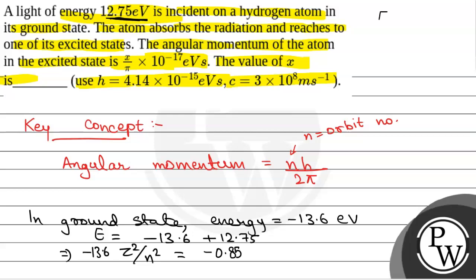This is because energy in the nth orbit is equal to -13.6 z²/n², where z is the atomic number of the atom and n is the orbit number. So we have hydrogen atom, so z will be equal to 1. So n² will be equal to 13.6 divided by 0.85, which is equal to 16. So from here, n will be equal to 4.